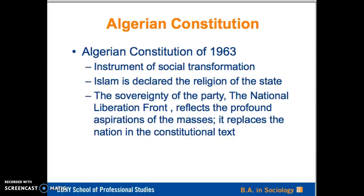The Algerian constitution is especially interesting. The Algerian constitution of 1963 combines many of the ideas Argyman discusses as he develops his thesis of the ideological constitution. It was an instrument of social transformation. Islam was declared the religion of the state. In this constitution, the political party — the National Liberation Front — reflected the profound aspirations of the masses as part of its revolutionary principle, but it replaced the nation as the principal party in the constitutional text.